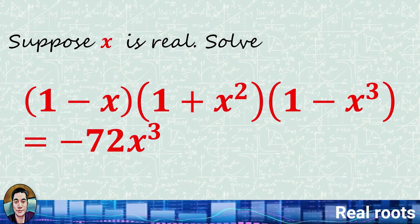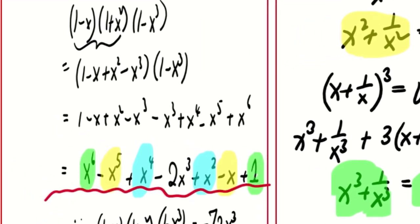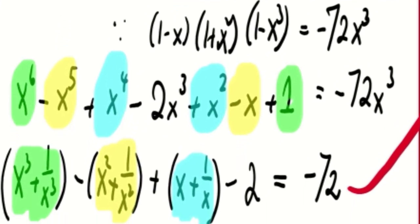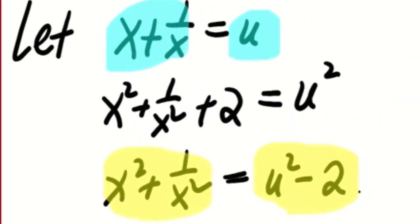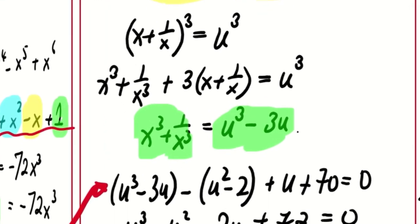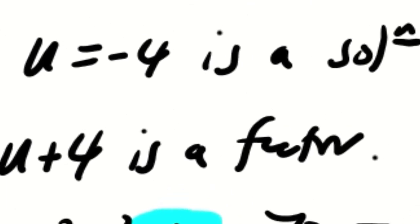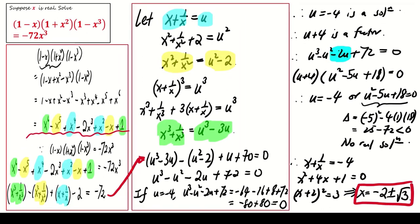At the beginning this question looks quite challenging, but after observing the nice pattern in the coefficients, it is not difficult to come up with a successful approach: divide both sides by x cubed, then let x plus 1 over x equal u. After a bit of hard work, we get a cubic in u, and luckily one of the solutions is an integer, so we can factorize further to get the final answer. That's all for today's short discussion — see you next time, bye-bye.